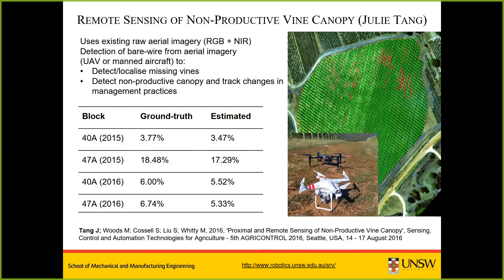Next, looking at what happens in the block regarding effects on final yield. Work by PhD student Julie Tang used aerial imagery from manned vehicles or UAVs to fly over the blocks and detect areas of non-bearing cordon or missing vines. The proportion of non-bearing cordon was substantial — in one case 18%, although this was improved dramatically to around 6% by manual intervention the following year. If you don't know how many vines are missing, that 6% will immediately impact your overall yield estimate.